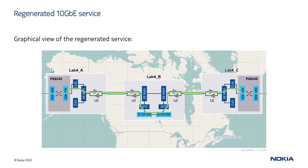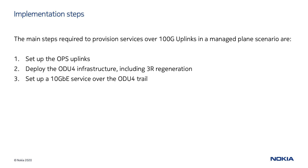A 10 GBE service is terminated onto a pair of input/output, or I/O, cards equipped in the PSS-24X shelves that terminate the service. The signal passes through the photonic shelves across the four UC-400 uplink cards. The middle node is used for signal regeneration and is made of a PSS-32 shelf only. Prior to the service deployment, it is necessary to create the OTN optical infrastructure that will support the service, provisioning the physical connectivity between PSS-24X and PSS-32 shelves, and then creating the ODU-4 regenerated infrastructure.